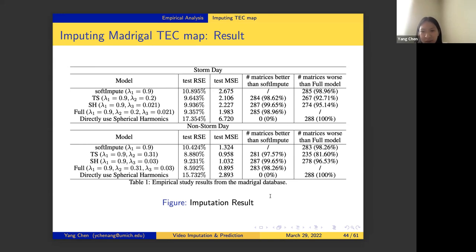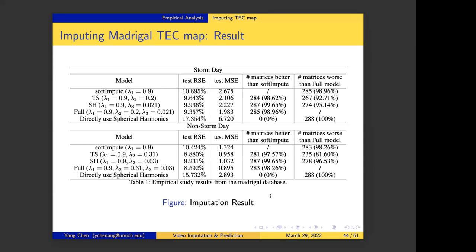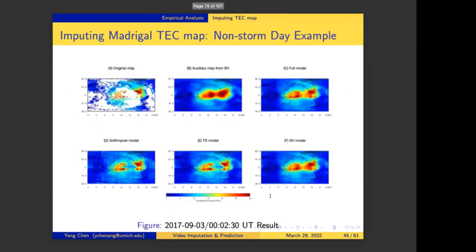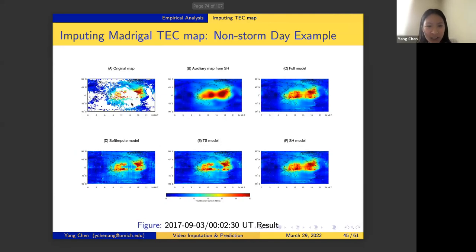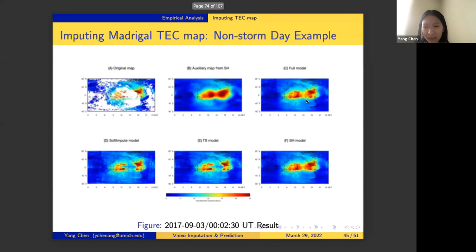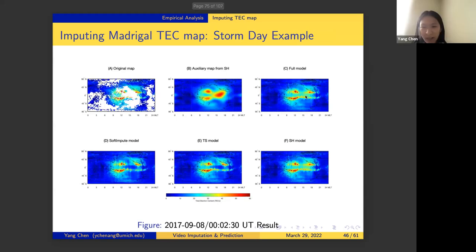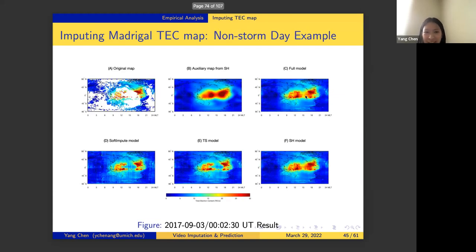Q: Is it possible that storms are causing the missingness — could a big storm break radio communication with the satellite? A: The missingness is really caused by the location of the receiver — if you have a ground receiver, you have observed data. Storms cause different structures, like the bifurcation seen on storm days versus non-storm days. We would need two different forecasting models for storm versus non-storm days, but not for imputation. A really major storm could in principle affect receivers, but that is a rarity — most storms impact positioning accuracy without breaking receivers.